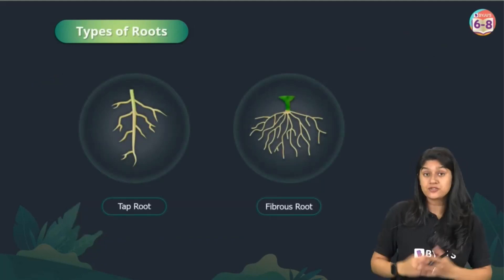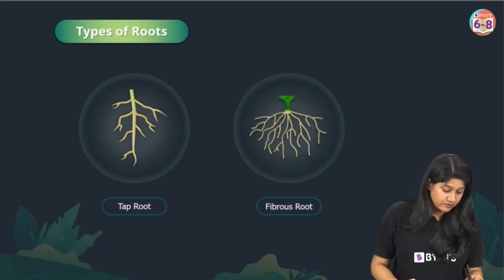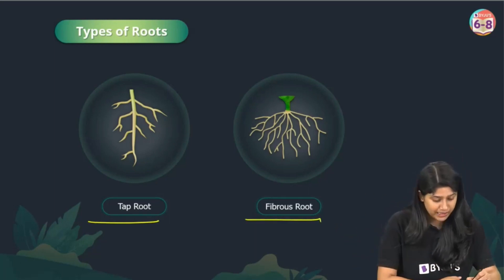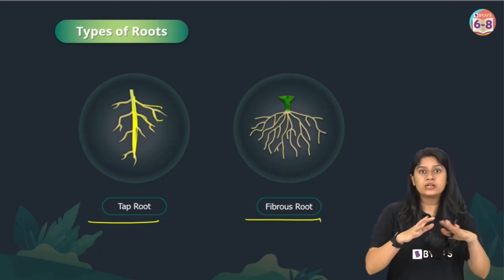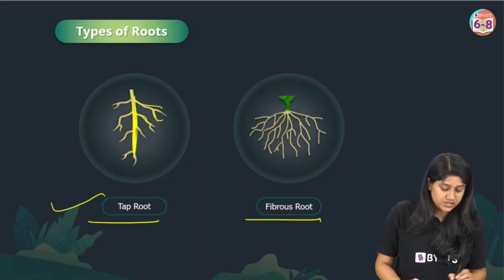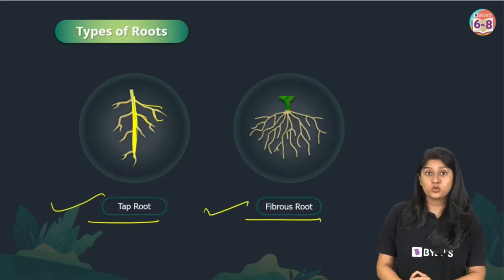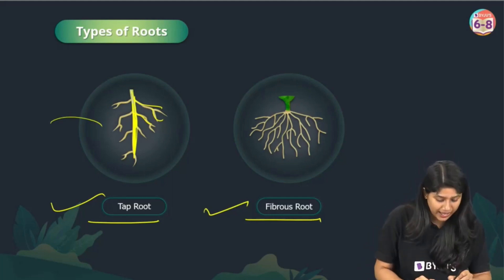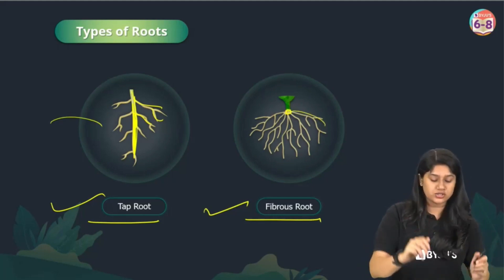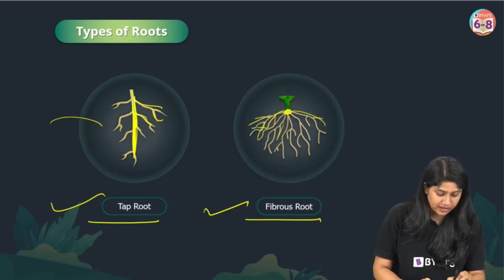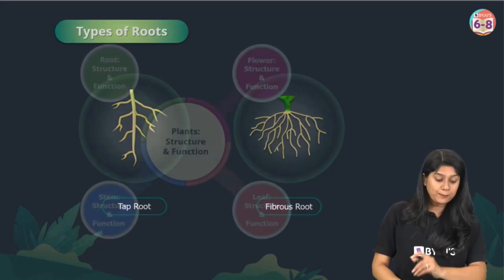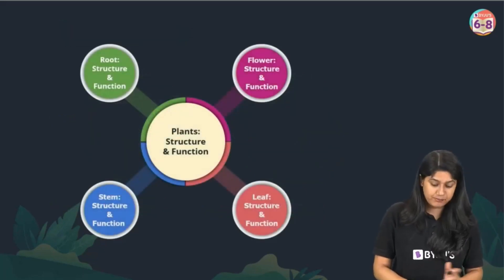There are two different types of roots. We have tap root and fibrous root. In a tap root system, there is a main root from which different branches arise. In a fibrous root, there is no main root — instead, we have a bunch of thread-like structures. So those are the two types: tap root and fibrous root.